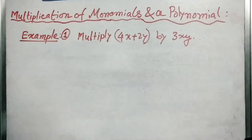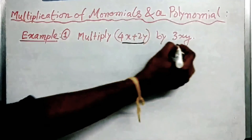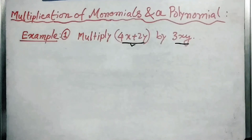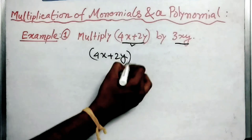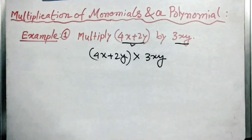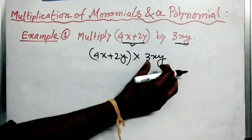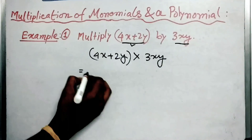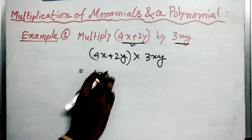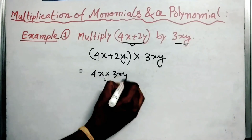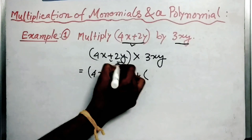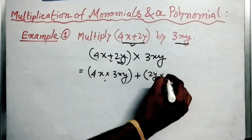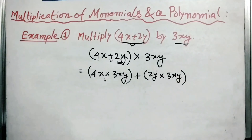Here the question is: multiply 4x plus 2y by 3xy. So this is a polynomial. Let us write it as: (4x + 2y) multiplied by 3xy. As I said, we multiply each term of the polynomial with the monomial. So this is 4x multiplied by 3xy, plus 2y multiplied by 3xy.